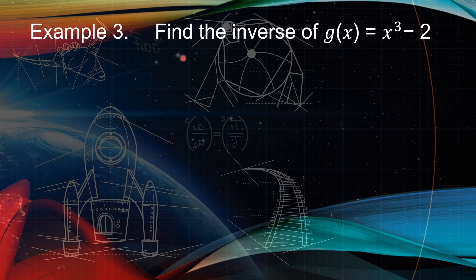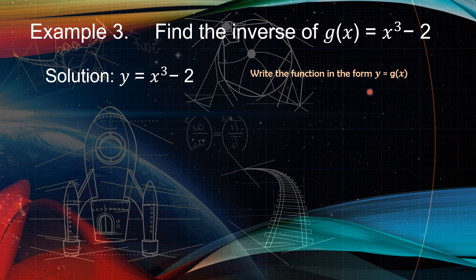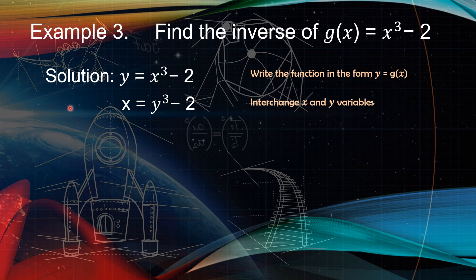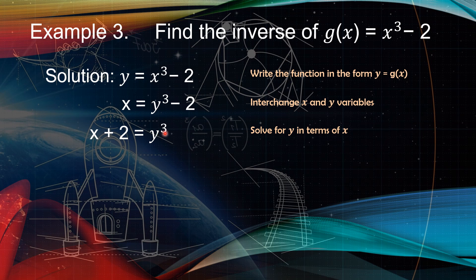Example number 3: find the inverse of g(x) equals x cubed minus 2. First step is to write the function in the form y equals g of x — just change g of x into y, and copy equals x cubed minus 2. Second step is to interchange x and y variables, so y becomes x and x becomes y. Third step is to solve for y in terms of x — transpose negative 2 to the other side, giving x plus 2 equals y cubed. To solve for y, we need to remove the exponent 3 by taking the cube root of both sides.